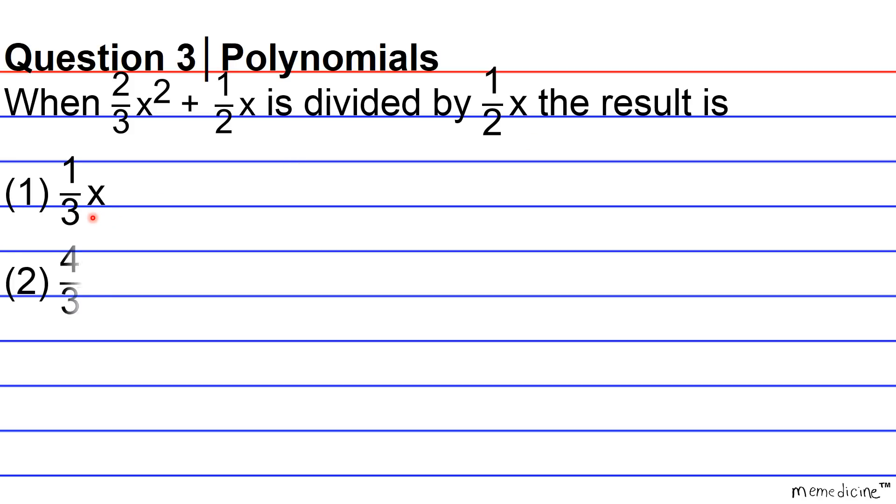1 over 3 x; 2, 4 thirds x; 3, 1 over 3 x plus 1; or 4, 4 over 3 x plus 1.